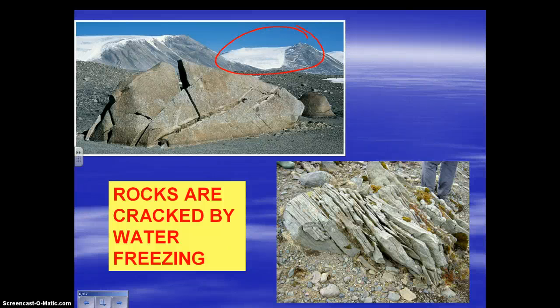More examples of frost action or ice wedging: in the top right corner you can see snow, which indicates this is an environment cold enough that water freezes sometimes — and you need that. You need a cold enough environment for ice wedging. Do we have that in New York? We sure do. This is definitely a location that gets cold, gets snow, things freeze.